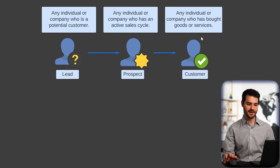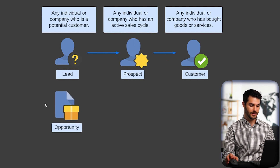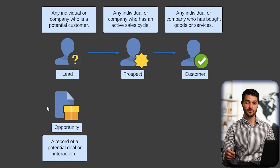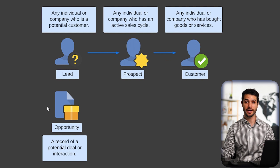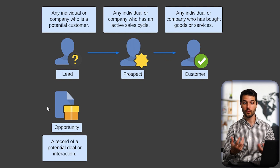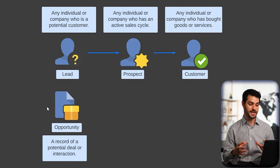Those are the entities related to lead-to-quote. Now let's take a look at the transaction side of things. We have an opportunity, which is a record of a potential deal or interaction. For example, if you create a lead, you can create an opportunity record and associate it with that lead, storing all the information about how you want to sell to them or anything related to that sales transaction.